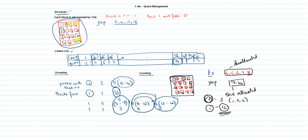This count indicates that block 1 is telling the operating system: if you want to store any file continuously, I have 12 memory blocks available. You can store any file not exceeding 12 continuous blocks. This is what is known as counting. These are the different methods for free space management.